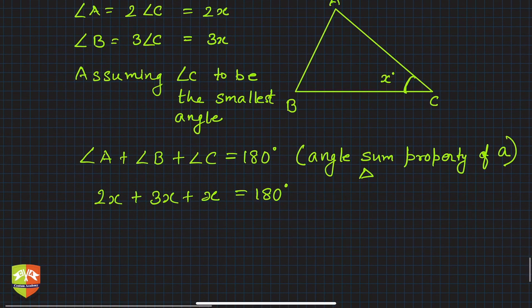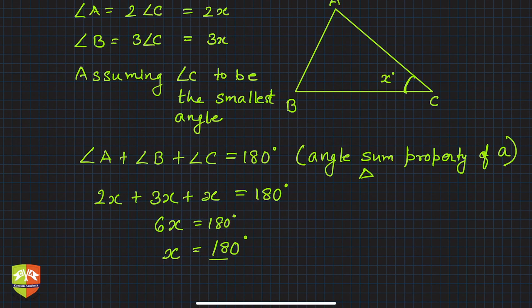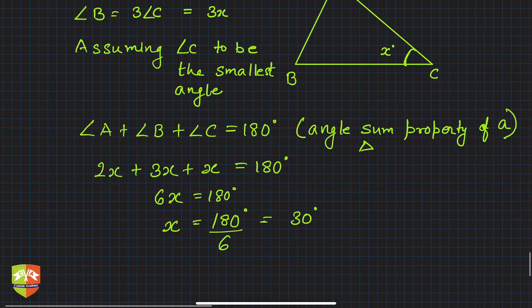Angle A was 2x, angle B was 3x, and angle C was x, and this total is 180 degrees. So 2x plus 3x plus x, which is 6x, equals 180 degrees. Therefore x equals 180 divided by 6, which is 30 degrees. So the smallest angle is equal to 30 degrees. This is the solution.